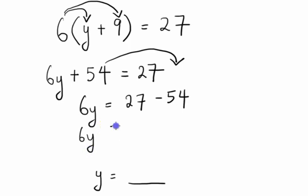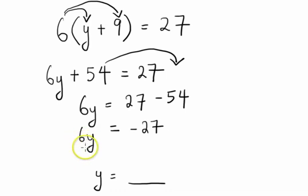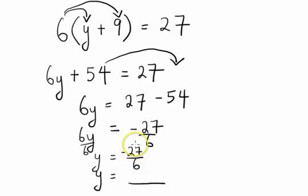27 minus 54 gives us negative 27. To remove the 6, we divide both sides by 6, giving us y equals negative 27 over 6. We can simplify this fraction by dividing by the common factor of 3: 6 divided by 3 is 2, and 27 divided by 3 is 9.